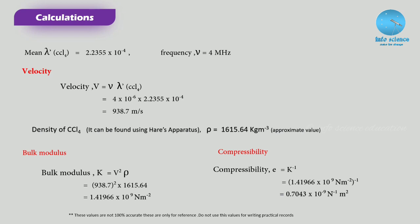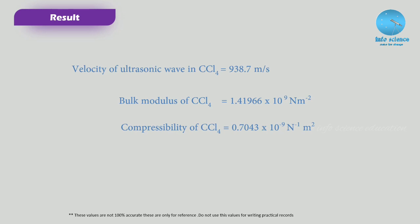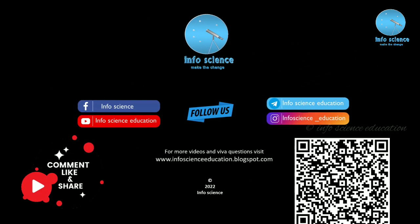The compressibility is the reciprocal of bulk modulus, giving β = 0.7043 × 10⁻⁹ N⁻¹m². So the results of this experiment are: velocity of ultrasonic wave in CCl4 = 938.7 m/s, bulk modulus of CCl4 = 1.41966 × 10⁹ N/m², and compressibility of CCl4 = 0.7043 × 10⁻⁹ N⁻¹m². For more information and videos, visit our website at www.infoscienceeducation.blogspot.com. We will see you in the next video — thanks for watching.